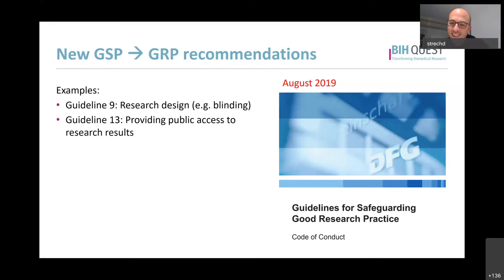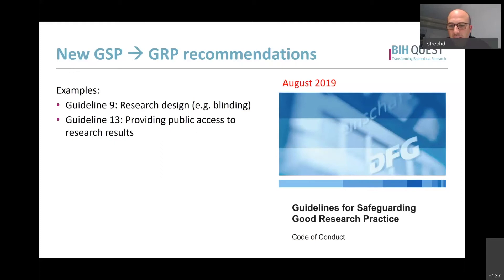So in a certain way, I now introduce you to good research practice recommendations. Here are two examples of what I mean with relatively new types of recommendations. The new guideline nine highlights the importance of research design and especially how we should seek to, as best as possible, improve the reliability and reproducibility of our results. These guidelines explicitly mention, as an example, the blinding of outcome assessment - things that had not been addressed in the German guidelines before.